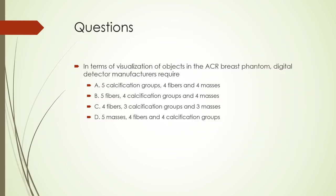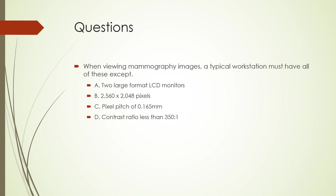First question: In terms of visualization of objects in the ACR breast phantom, direct digital detector manufacturers require which of the following? A: 5 calcification groups, 4 fibers, and 4 masses. B: 5 fibers, 4 calcification groups, and 4 masses. C: 4 fibers, 3 calcification groups, and 3 masses. D: 5 masses, 4 fibers, and 4 calcification groups. The correct choice is B: 5 fibers, 4 calcification groups, and 4 masses. Second question: When viewing mammography images, a typical workstation must have all of these except: A: Two large-format LCD monitors. B: 2560 by 2048 pixels. C: Pixel pitch of 0.165 mm. D: Contrast ratio less than 350 to 1. The correct choice is D—a contrast ratio less than 350 to 1 is not correct for a mammography monitor.